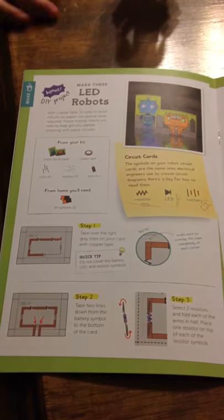And then, more, in the Tinker Crate, there's actually more projects. There's more projects that you can do. And it comes with all extra pieces right here. And this is just some of the projects that you could do. So, with these two paper cards, you can make robots.